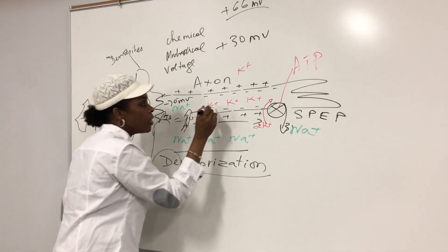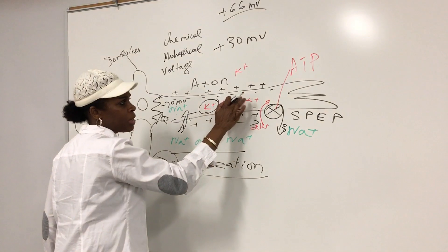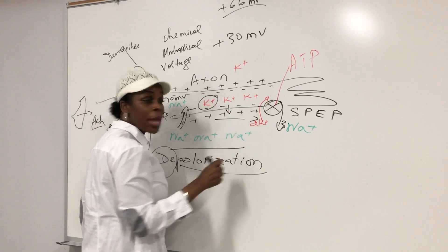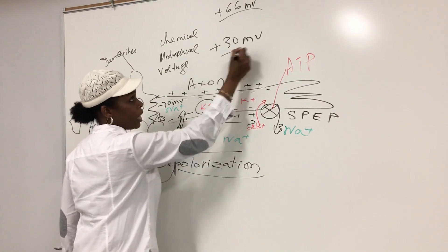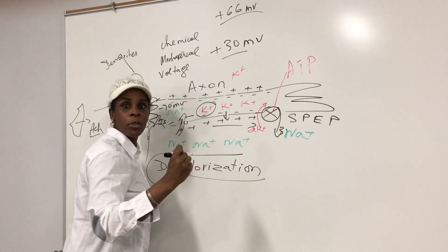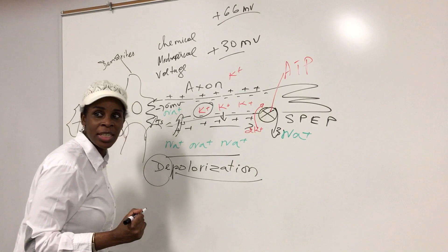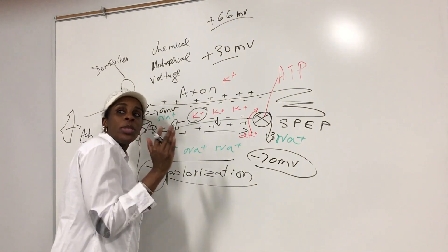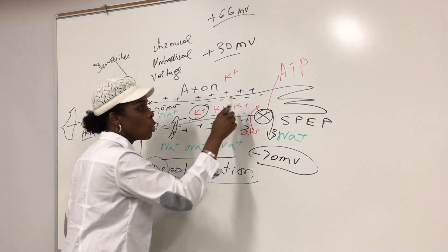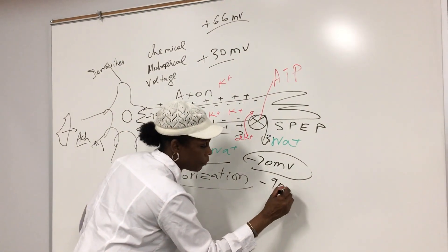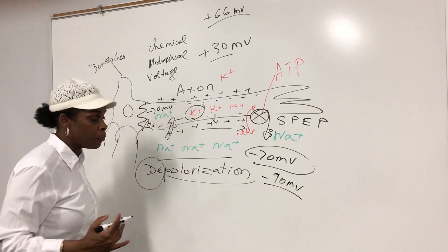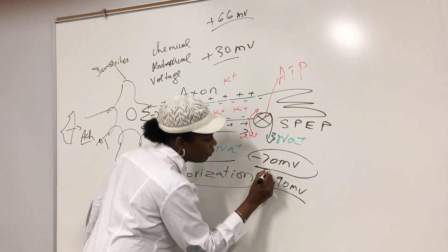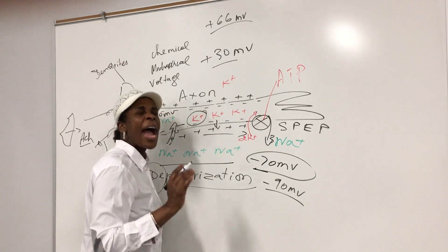As soon as the sodium gate closes, the potassium gate will open. Because we have a lot of potassium inside, naturally it will come out. So the potassium gate opens and potassium comes out of the cell. When potassium comes out, the positive 30 millivolts will go down again: plus 20, plus 10, zero, negative 10, up to negative 70 millivolts. At negative 70, when we reach the resting membrane potential, the potassium gate will start closing. As it closes, some potassium will still come out, down to negative 90 millivolts.